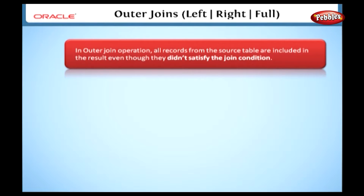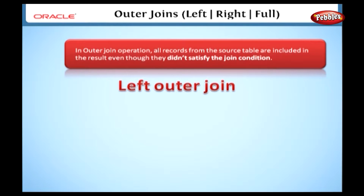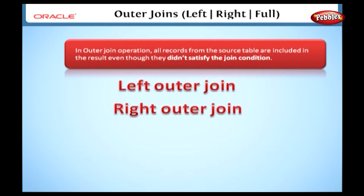In an outer join operation, all records from the source table are included in the result, even though they didn't satisfy the join condition. Outer join is classified into three types: left outer join, right outer join, and full outer join.